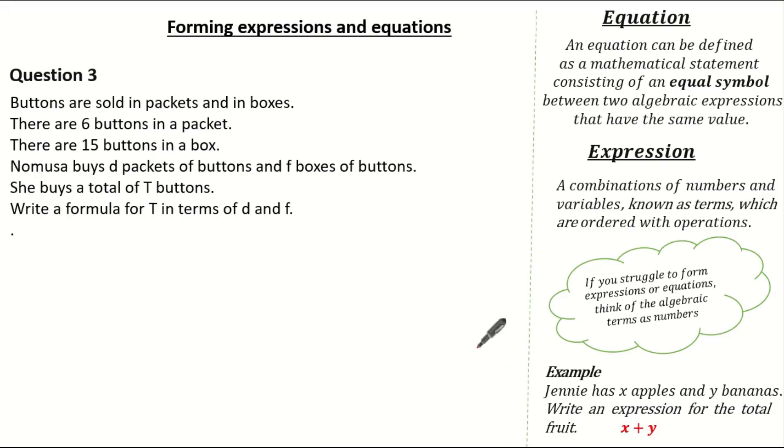The next exam question states buttons are sold in packets and in boxes. There are 6 buttons in a packet and there are 15 buttons in a box. Numusa buys D packets of buttons and F boxes of buttons. She buys a total of T buttons. And we are asked to write a formula for T in terms of D and F. See if you can give it a go and press pause if you need.